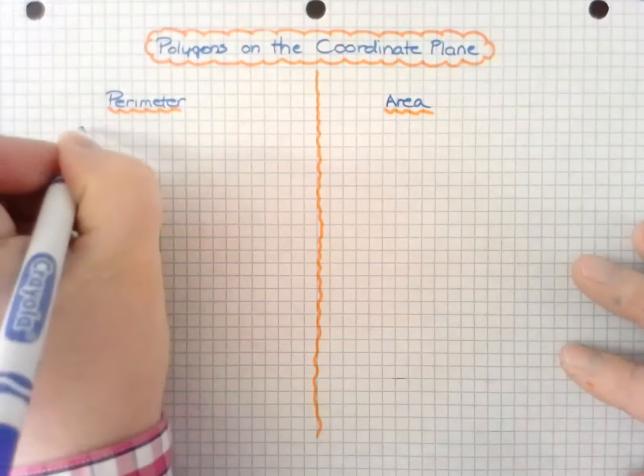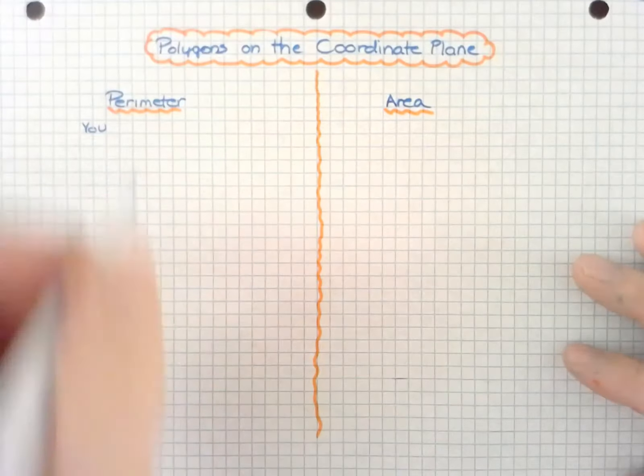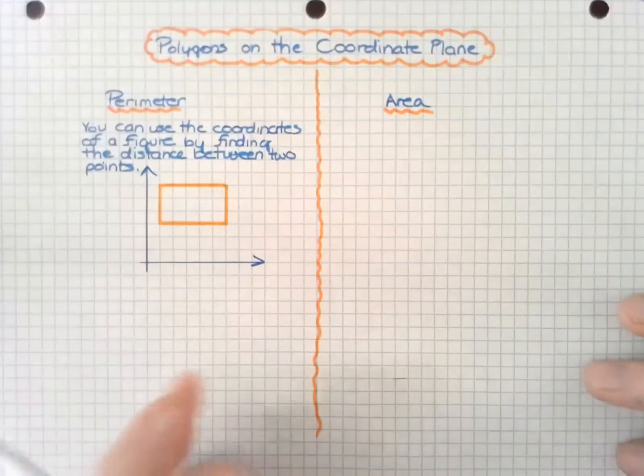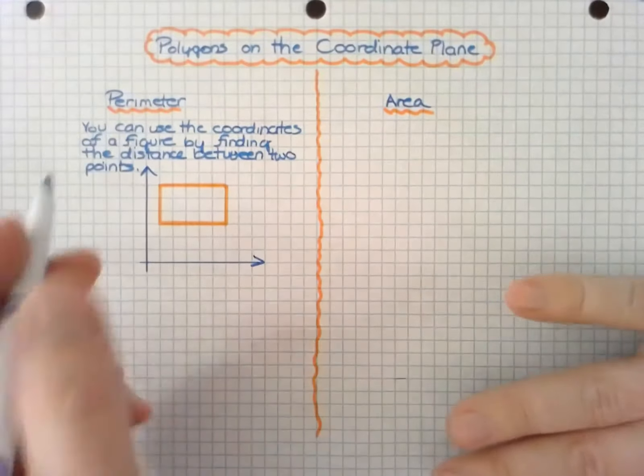So perimeter, you can use the coordinates of a figure by finding the distance between two points. So I drew a coordinate graph and then plotted a rectangle on the coordinate plane.